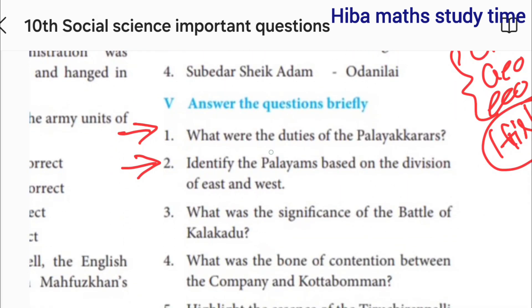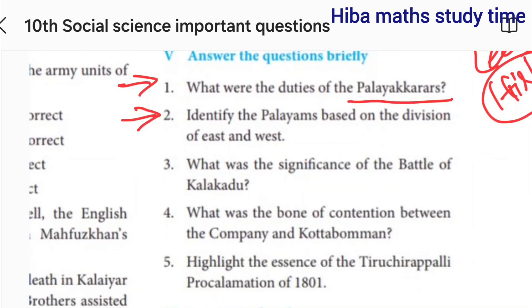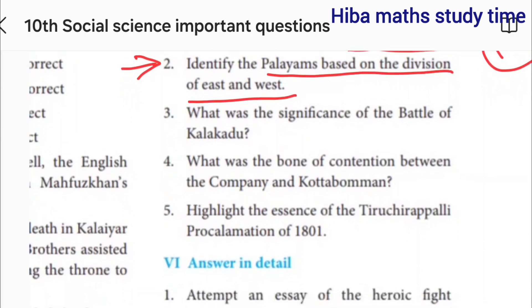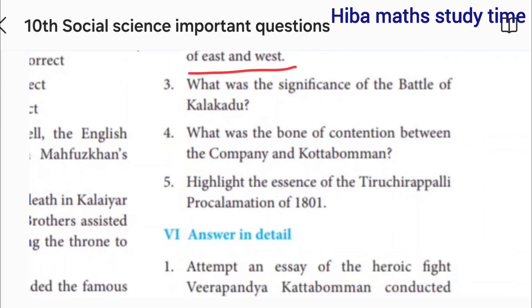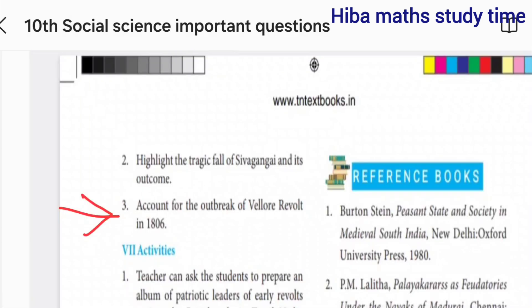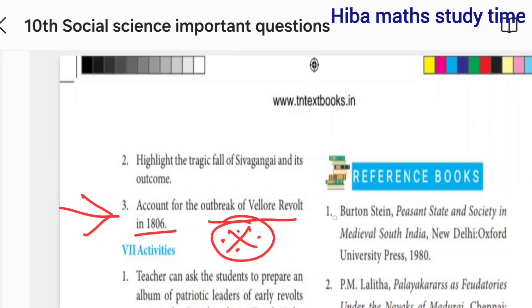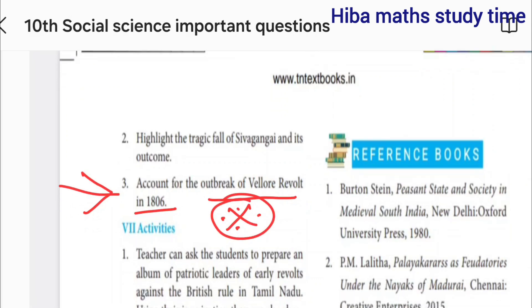First, what were the duties of Palaykaras? Identify the Palayims based on the divisions of East and West. That's the first question — a detailed answer. Third question: account for the outbreak of the Wales Revolt. This is a very important question. This is the government.